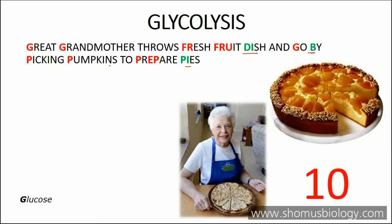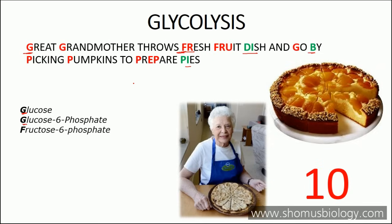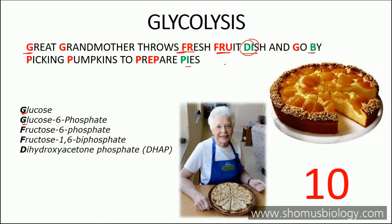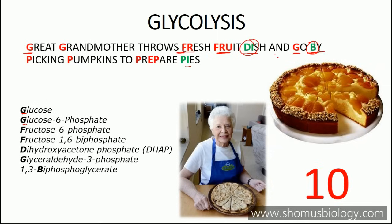Starting with 'Great' — G means glucose. Another G: glucose-6-phosphate. Then FR: fructose-6-phosphate. Then another FR: fructose-1,6-bisphosphate. Then DI: dihydroxyacetone phosphate. Then G again: glyceraldehyde-3-phosphate. Then BI: 1,3-bisphosphoglycerate. Then P: 3-phosphoglycerate. Then another P: 2-phosphoglycerate.